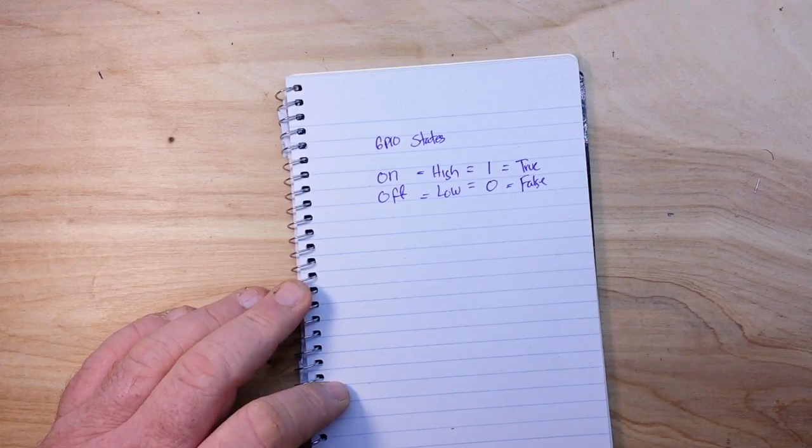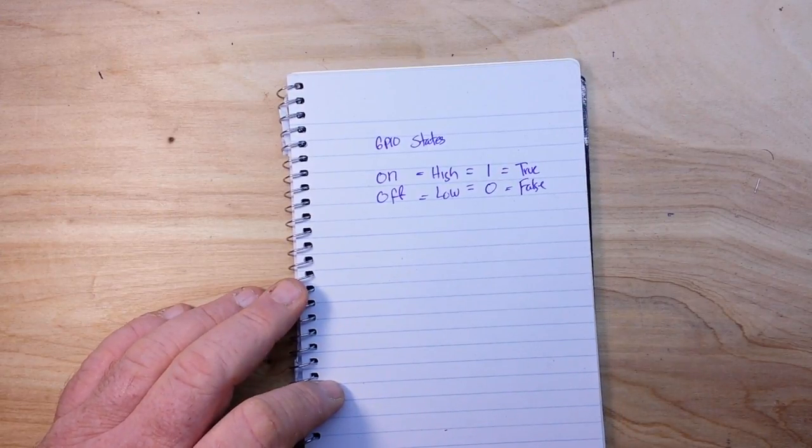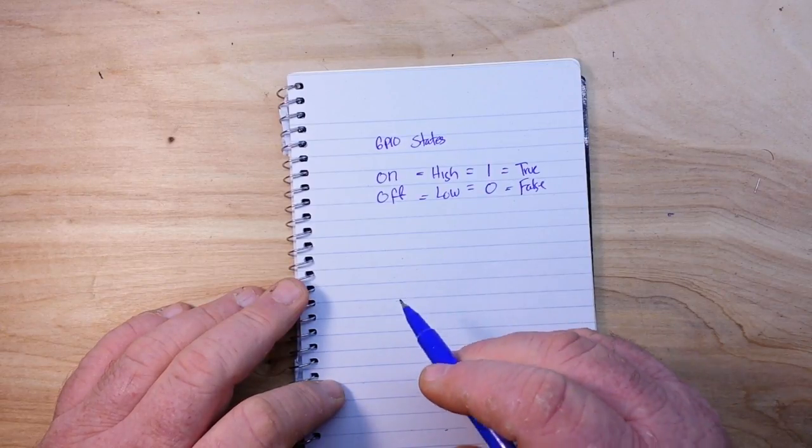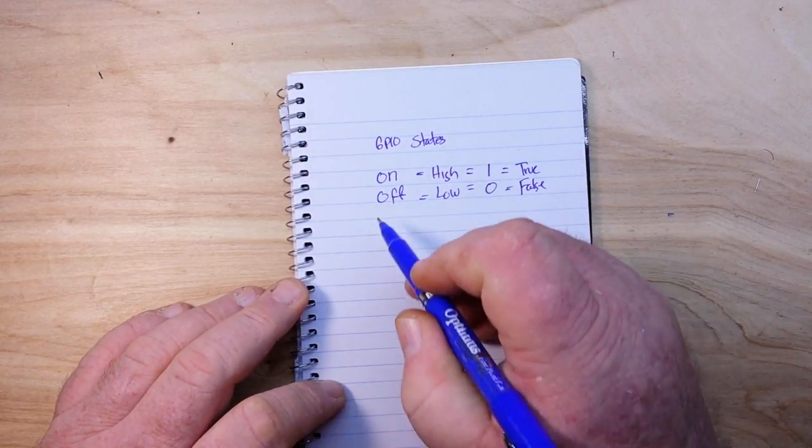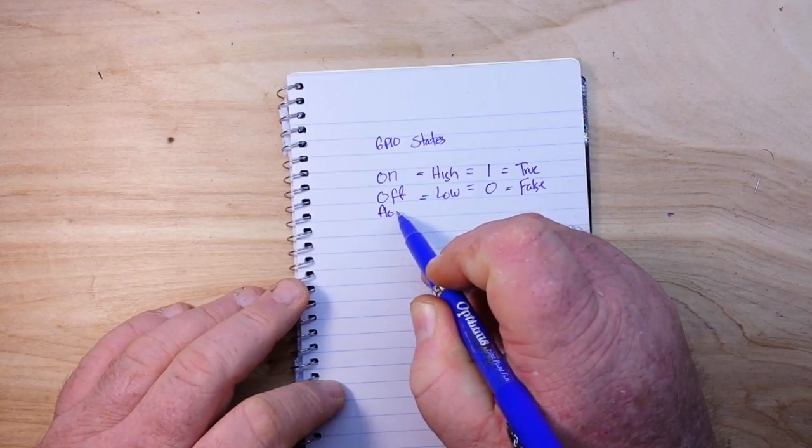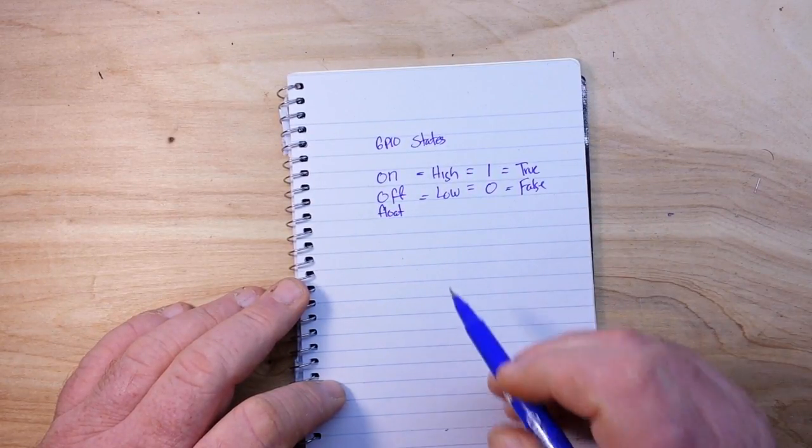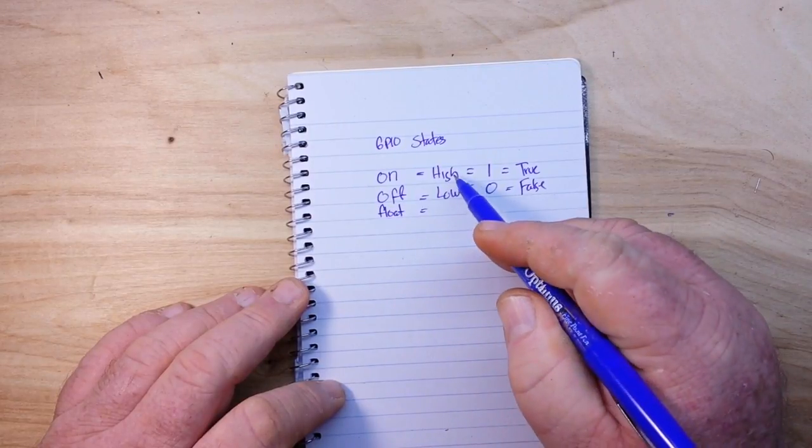And those are the two states that any of the pins can be in. Right? Wrong. There is a third state, and that third state is the floating state.